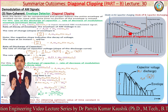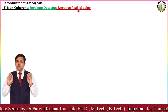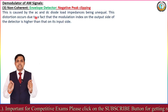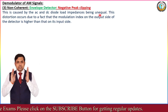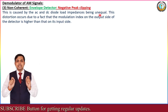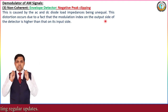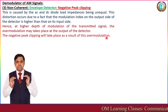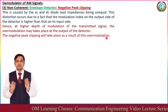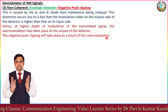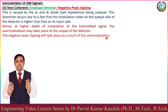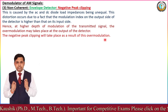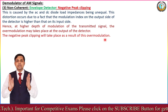Here we have a discussion about negative peak clipping, and this is due to unequal values of AC and DC diode load impedance. Due to this fact, the modulation index on the output side of the detector is higher than that on its input side. As per the higher depth of modulation of the transmitted signal, over modulation takes place at the output of the detector, and due to this over modulation, the negative peak clipping takes place.